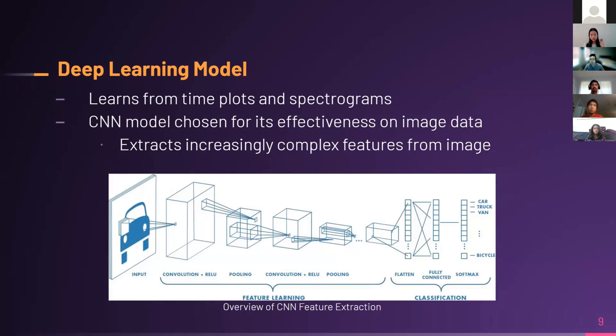I'll go over the process of designing the deep learning model. As Emily and David previously stated, this model uses both the time plots and spectrograms as input, because with the spectrograms, we have more depth of information that's not apparent with just the standard time plots. We chose to use a convolutional neural network or CNN, which have been proven to be very effective at learning image data using a process called convolution. Convolution is essentially when the model converts an image into a matrix.